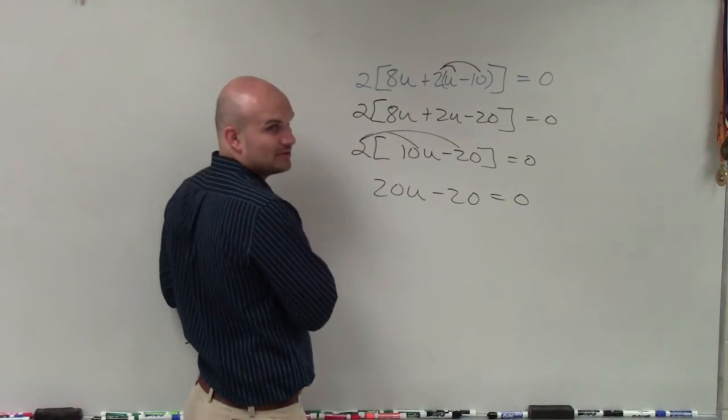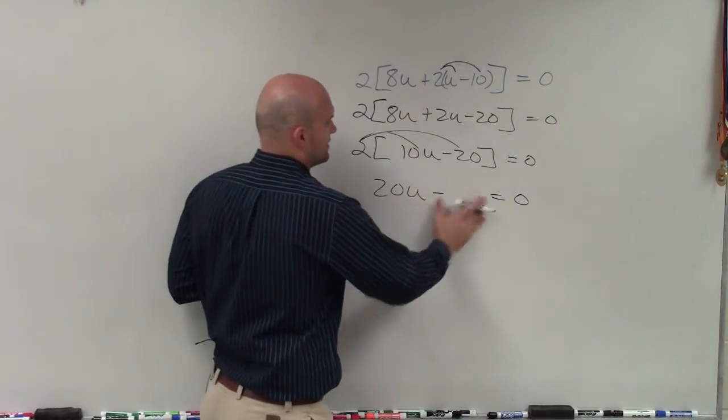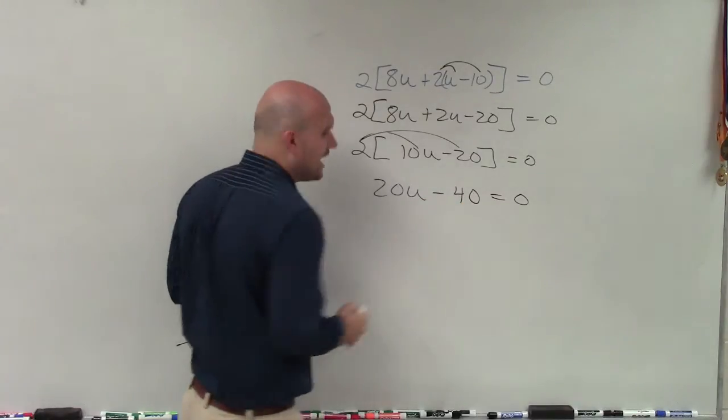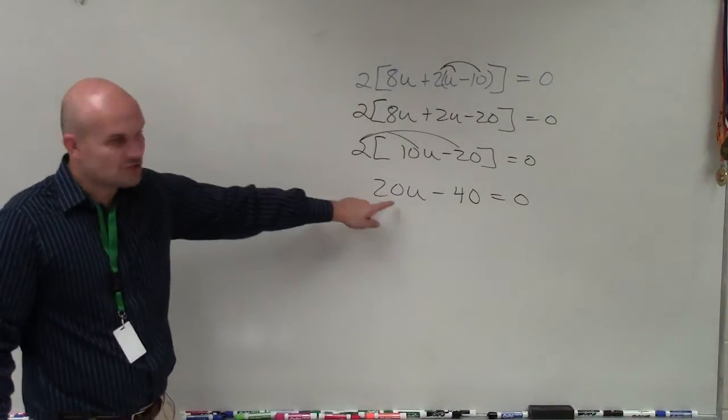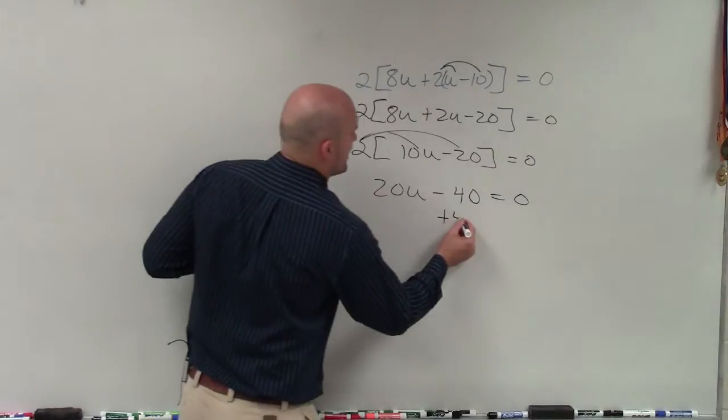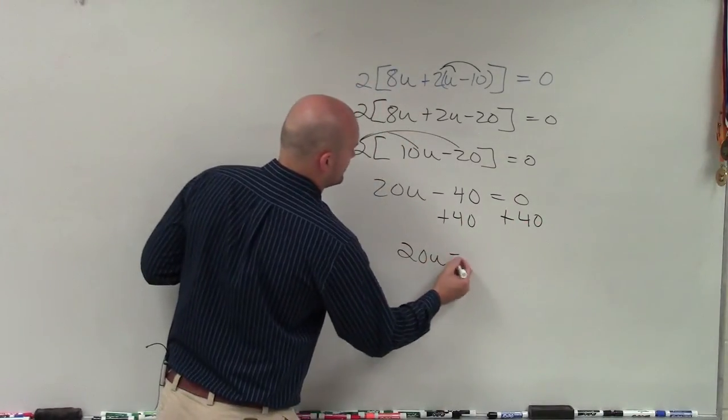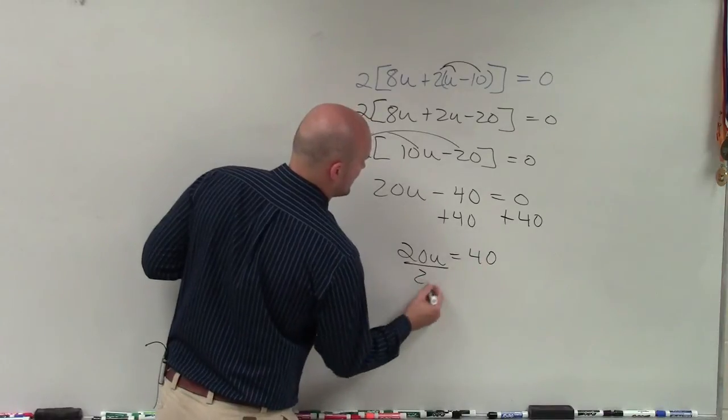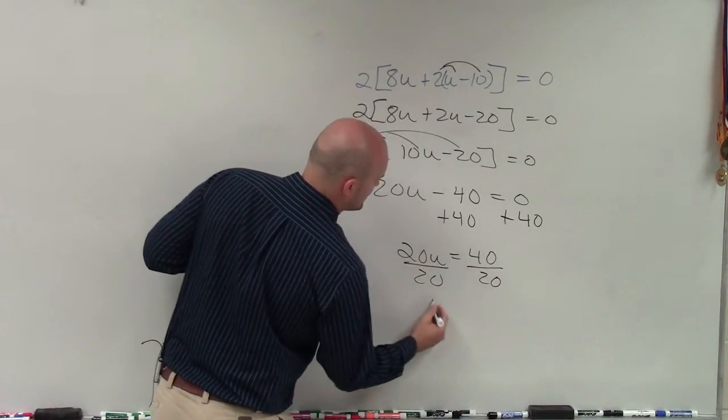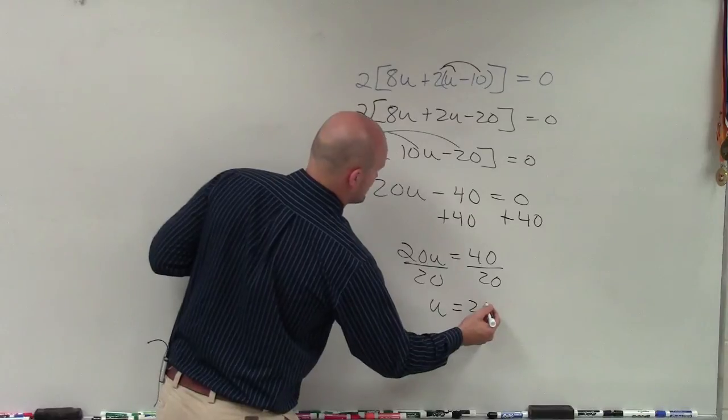Now I have a 2-step equation. Oh, minus 40. Thank you. Now I have a 2-step equation. Solve for my variable u. So add 40, add 40. 20u equals 40. Divide by 20, divide by 20. u equals 2.